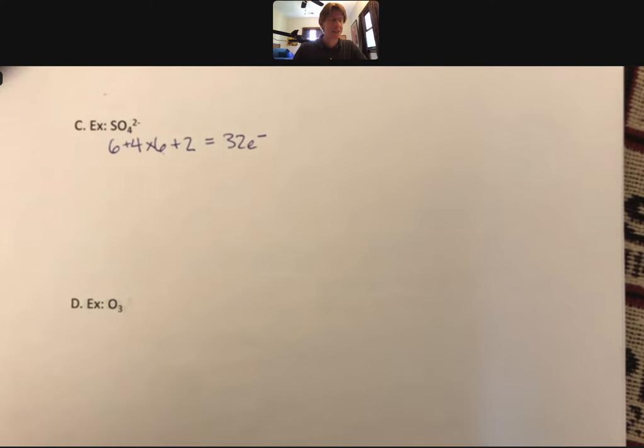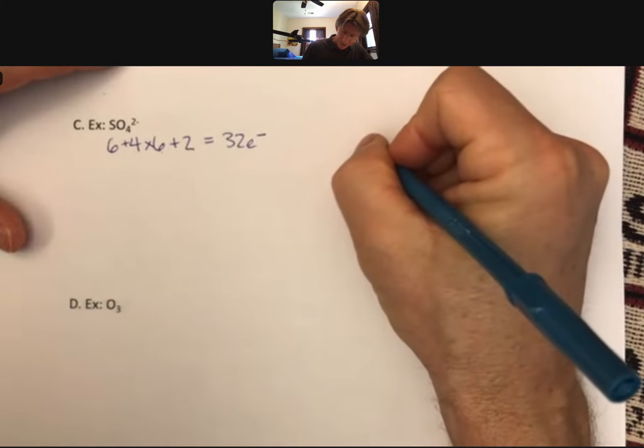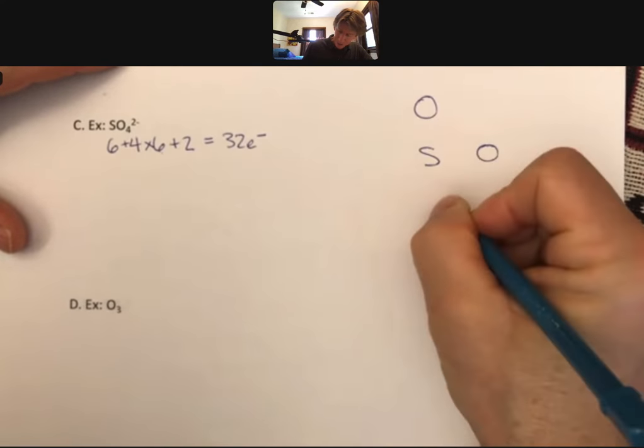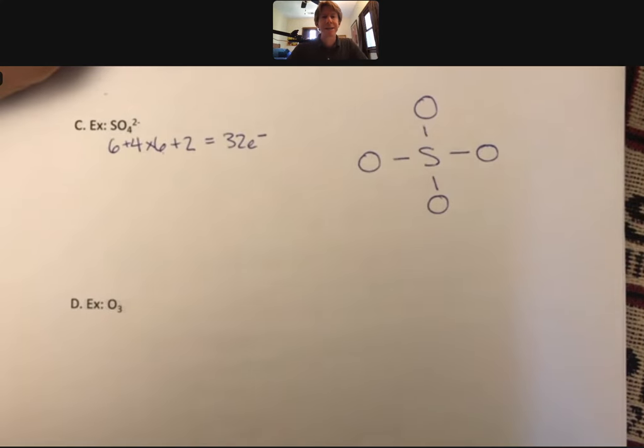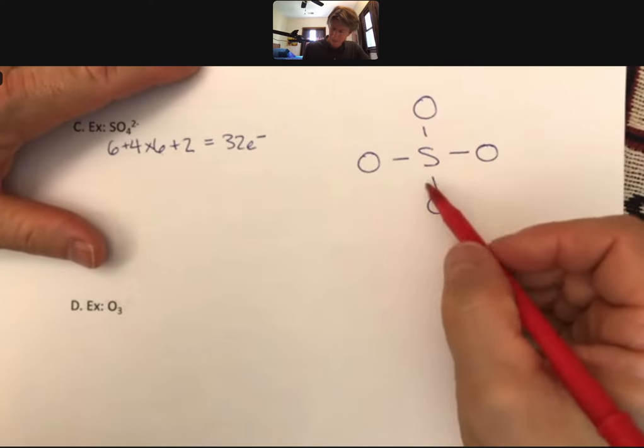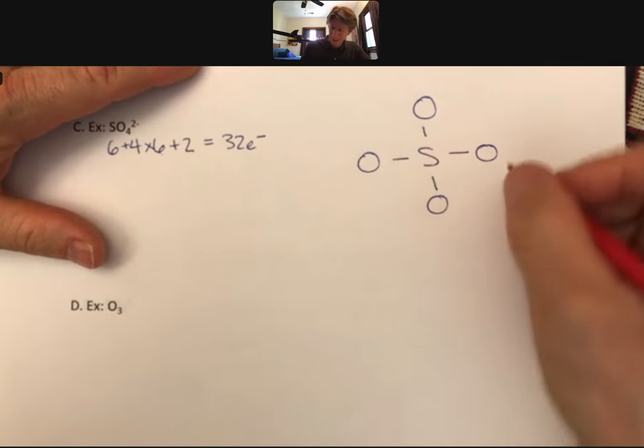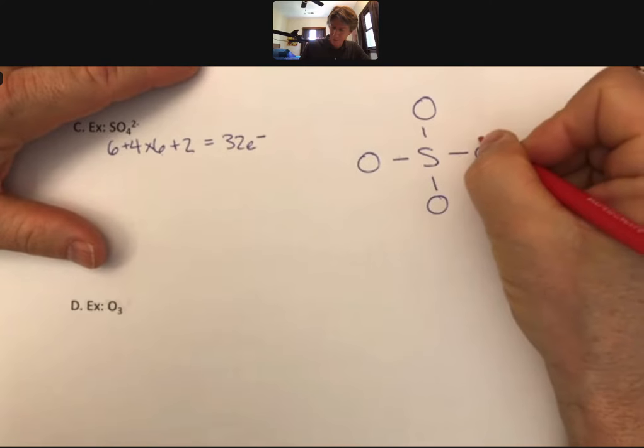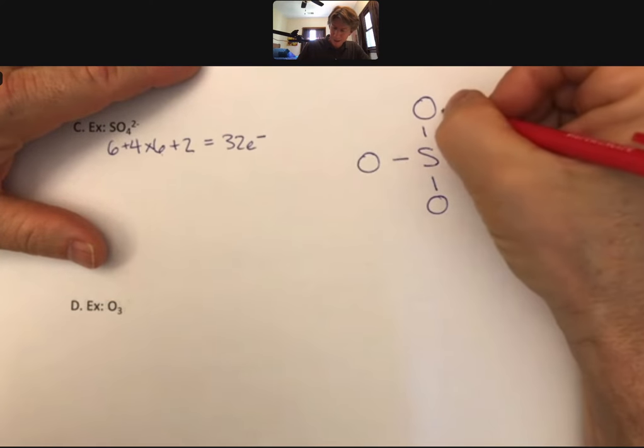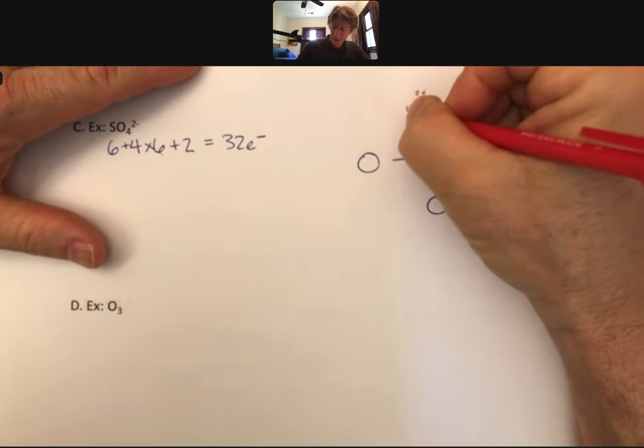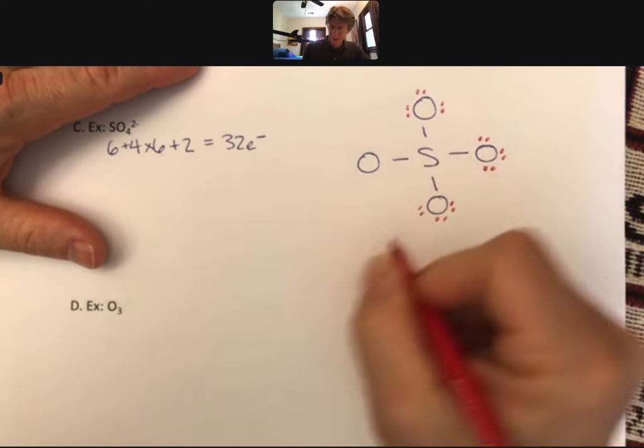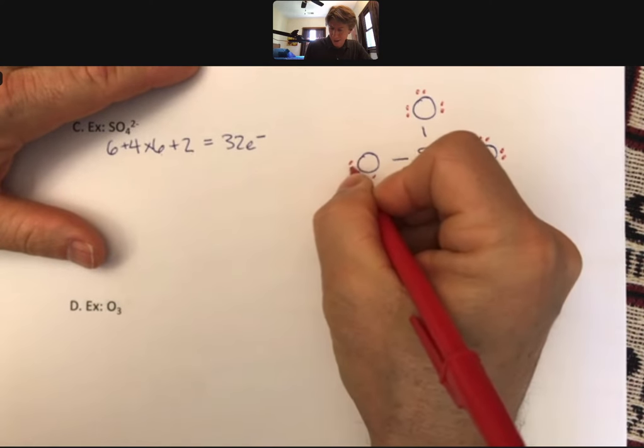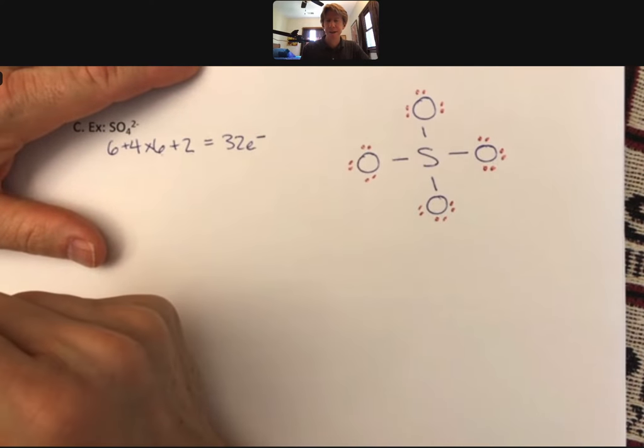As another note, oxygen tends to never be the central atom, except for perhaps water H₂O, and that's only because hydrogen cannot be the central atom. Surround the sulfur with oxygens, draw single bonds, and then it's time to sprinkle. I will sprinkle in red. I like to just count them up: 2, 4, 6, 8, 10, 12, 14, 16, 18, 20, 22, 24, 26, 28, 30, 32.